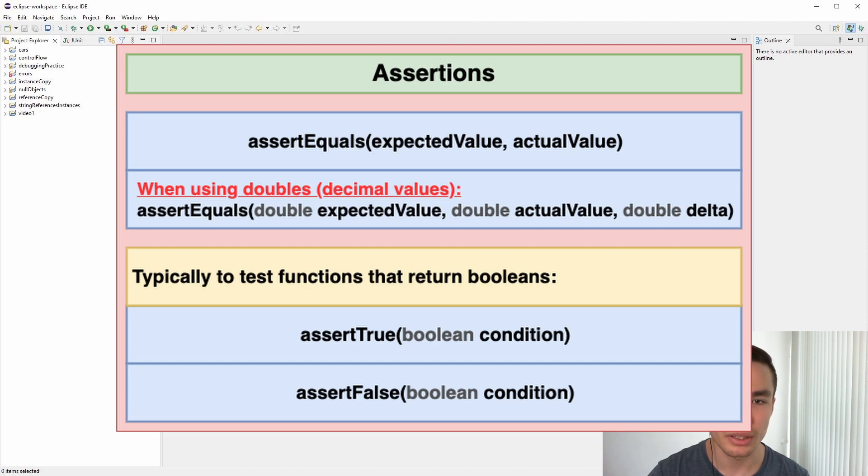There are three main types of assertions. We have assertEquals, which is likely the one you'll come across most and is used to compare the expected outcome of a function with the actual outcome. The expected outcome is typically a value we have calculated or determined to be correct. The actual outcome is obtained by calling the function being tested with a specific input. By comparing these two values, we can determine if the function is working correctly.